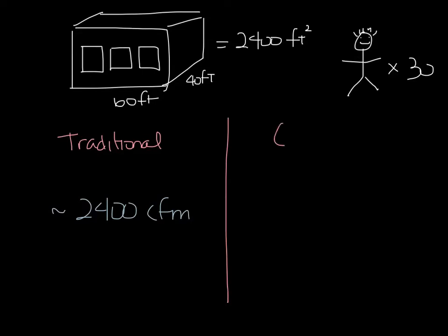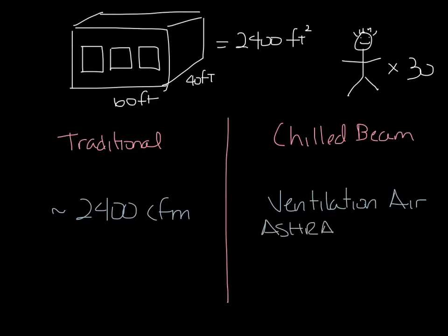If you have a chilled beam system, you would at minimum have enough airflow to handle the ASHRAE 62.1 ventilation rate. ASHRAE states that you have 5 CFM per person,